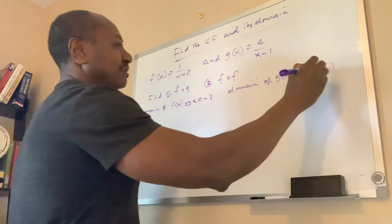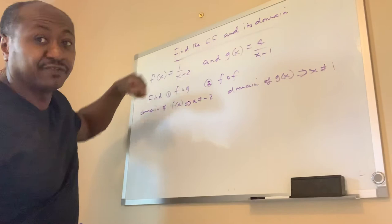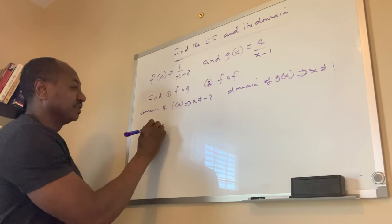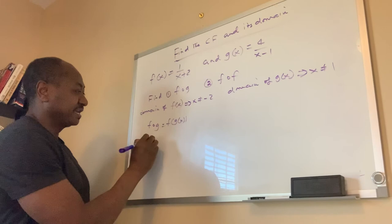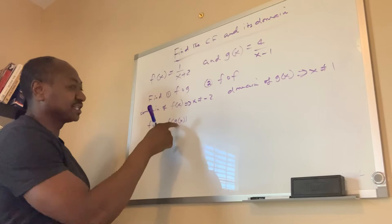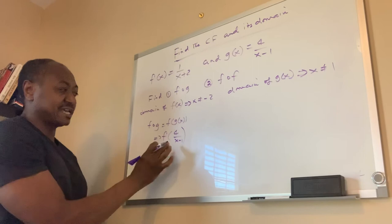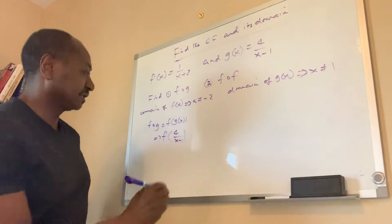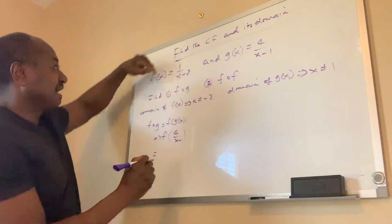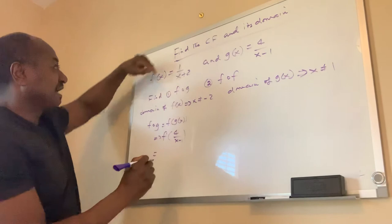Now we solve the composite function f of g, which translates into f of g of x. This means that in the function f of x, anywhere I see x, I'm going to replace it with 4 divided by x minus 1. That gives me: 1 over (4 divided by x minus 1) plus 2. This is the function f of g of x.